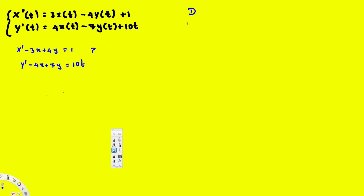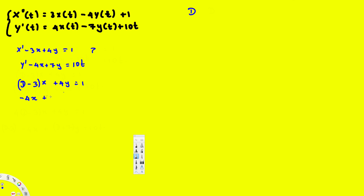Now after that, when we have a derivative we are going to replace it with D. D means take the derivative. So instead of x prime we can write it as D times x — dx means take the derivative of x one time. If you have D squared x, that means take the derivative of x two times, which is x double prime. Since we have x prime this is just D. So the first equation is (D minus 3)x plus 4y equals 1, and then for the second we have negative 4x plus y prime plus 7y, which becomes (D plus 7)y equals 10t.